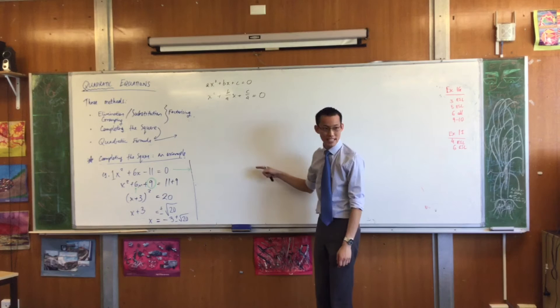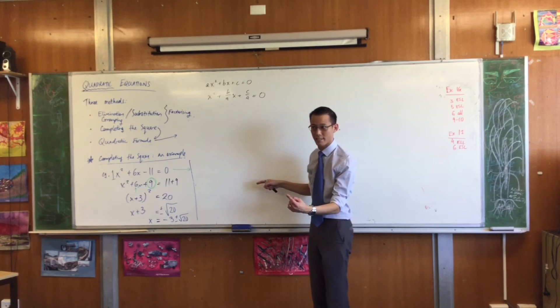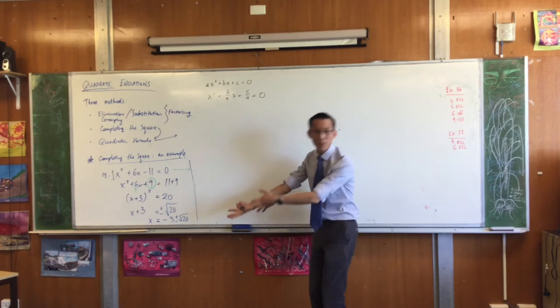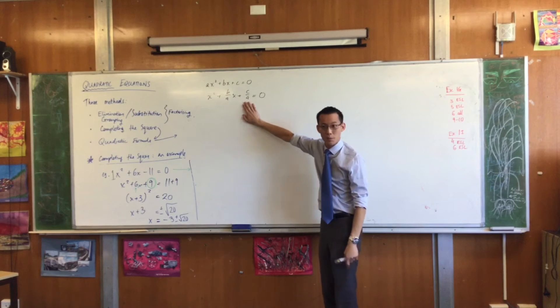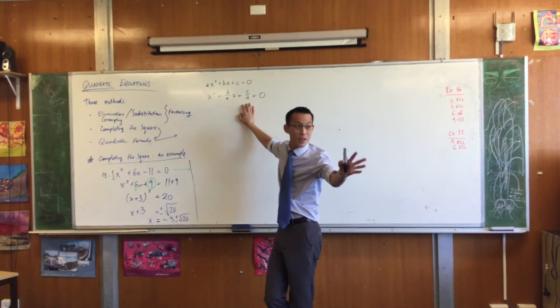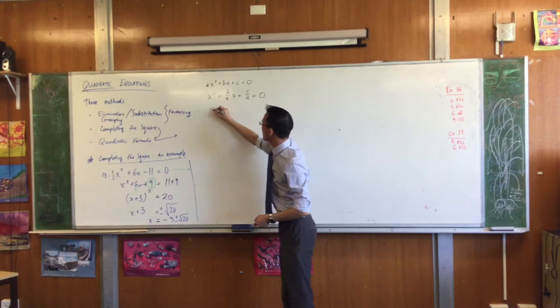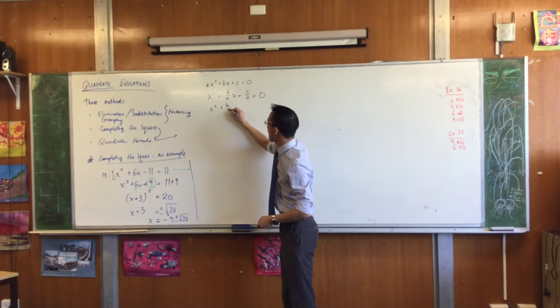When I had x squared plus 6x minus 11, what was the first thing I did? I got rid of the 11 over the other side. So here is the constant term - you know it's the constant because there's no x terms attached to it. Very good. So that leaves me with x squared plus b/a times x over there and minus c/a over there.